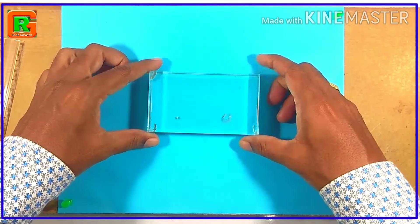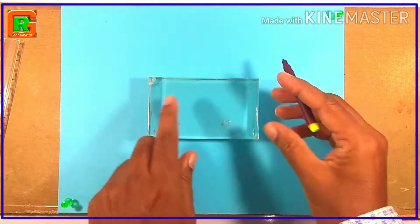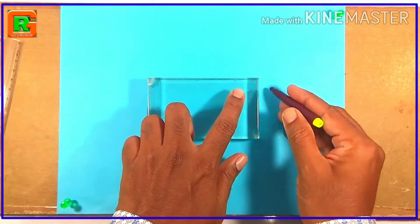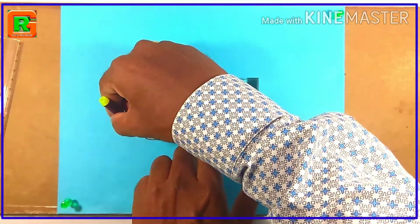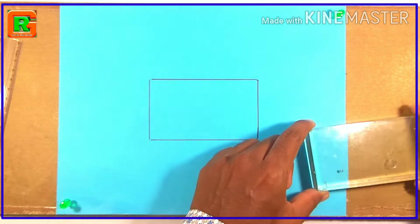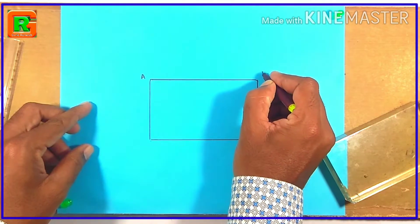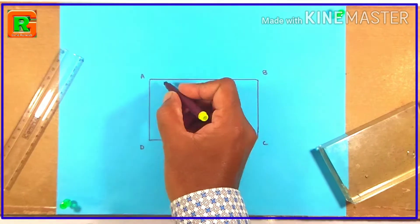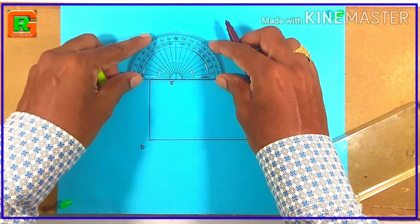Place a glass slab in the middle of the paper and draw a border line along the edges of the slab using a pen. Remove the glass slab — here we get a rectangle. Name the vertices of the rectangle as A, B, C, and D. Take a point E on AB and draw a perpendicular line to AB at point E.